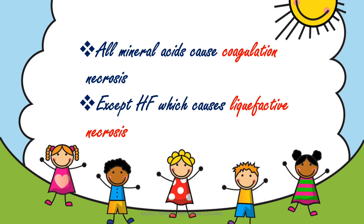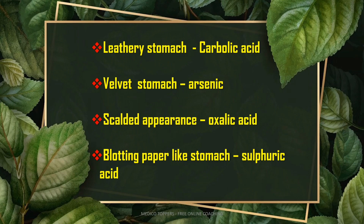Next, stomach appearances in acid poisoning: leathery stomach is seen in carbolic acid poisoning — remember, cars are made of leather. Velvet stomach is seen in arsenic poisoning. Scalded appearance is seen in oxalic acid poisoning. Blotting paper-like stomach is seen in sulphuric acid poisoning.